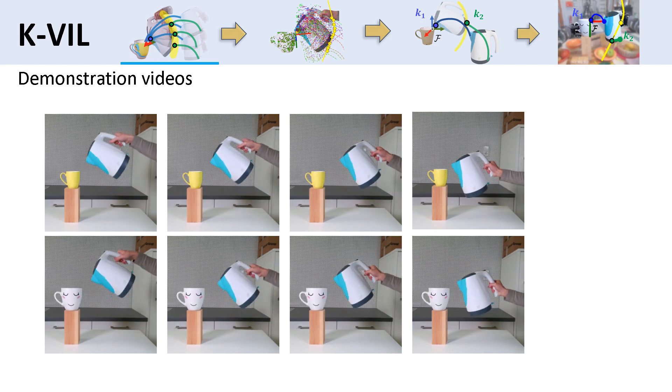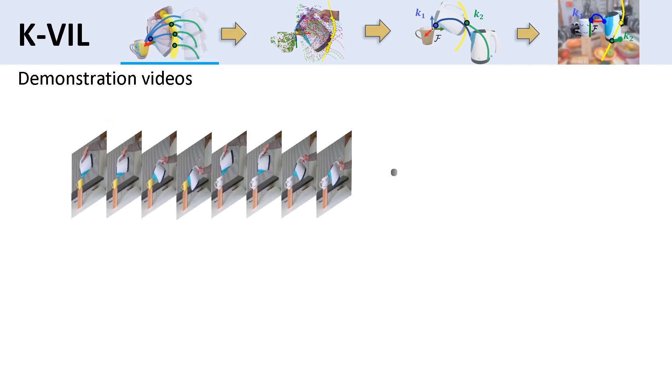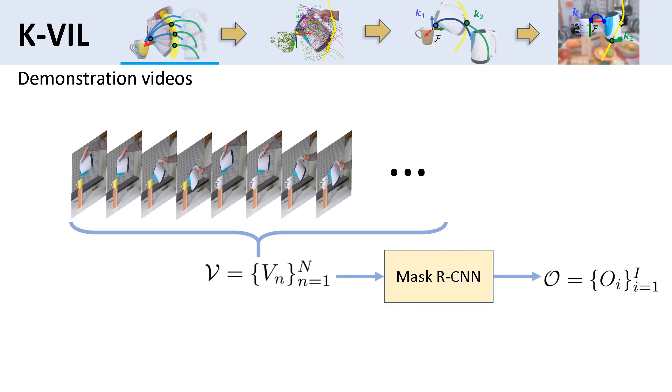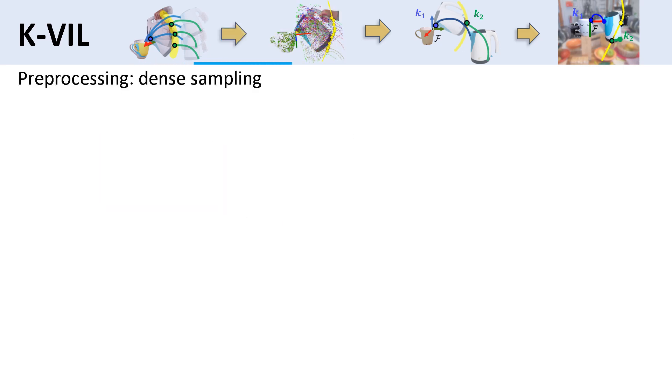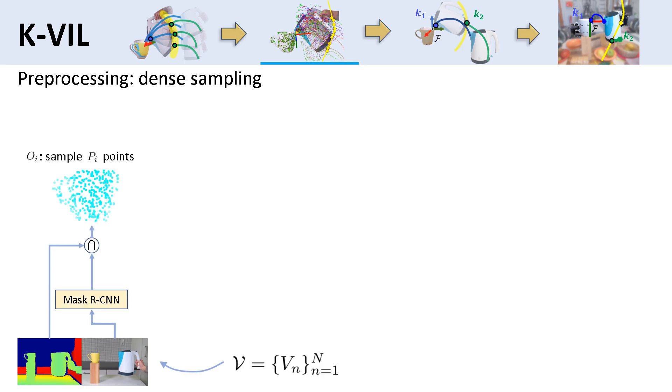First, we collect a few human demonstration videos and obtain the relevant objects using the Mask-RCNN model. We start with a preprocessing step by randomly sampling a color and depth image pair from the demonstrations as a reference to extract the point clouds, from which we sample candidate points for each object as their canonical shape. We then use DenseObjectNet to compute the descriptor for each candidate point from the RGB image. The spatial scale of each object is the maximum distance between all possible point pairs.